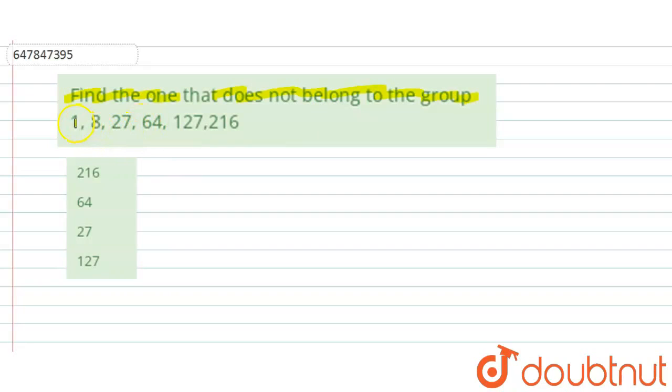So we have the series as 1, 8, 27, 64, 127 and 216 and further we are having 4 options. Option A, B, C and D, right?